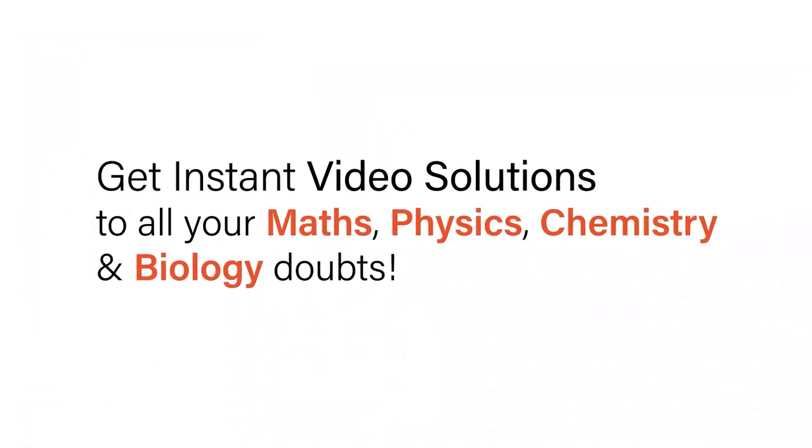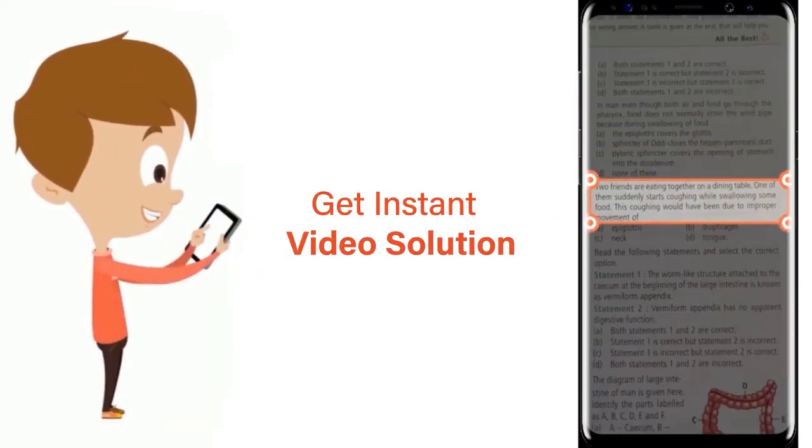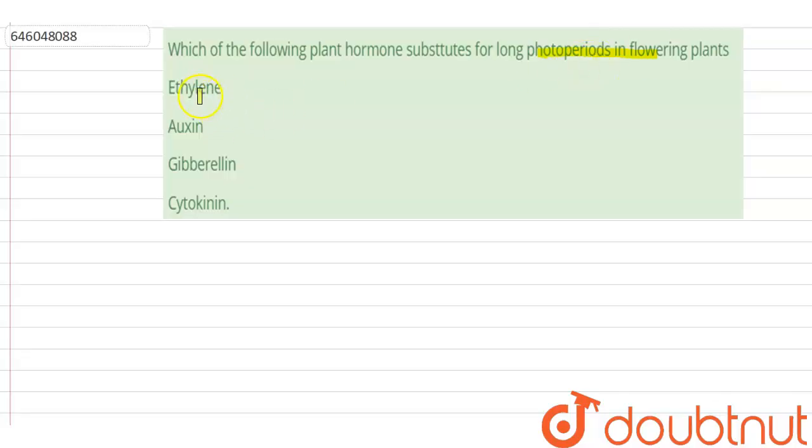With Doubtnut, get instant video solutions to all your maths, physics, chemistry, and biology doubts. Just click the image of the question, crop the question, and get instant video solution. Download Doubtnut app today. The correct option is gibberellin.